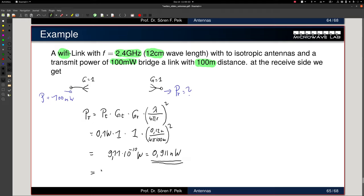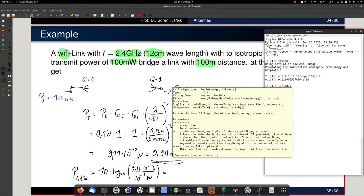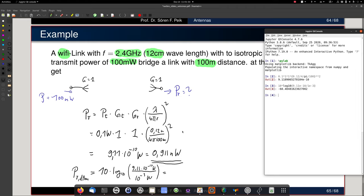I can convert this to DBMs. Remember, DBM is 10 times log 10 of my value, which is 9.11 10 to the minus 10 watts divided by 1 milliwatt, which is 10 to the minus 3 watts. And then I get P received in DBM, which is, let's calculate it, 10 times log 10 of 9.11 e to the minus 10 divided by 1 e to the minus 3. That would be this, and we get minus 60.4 dBm.